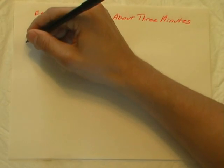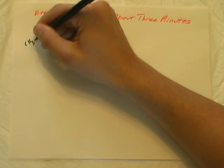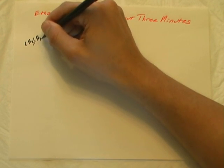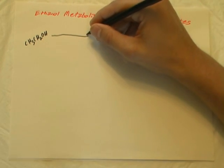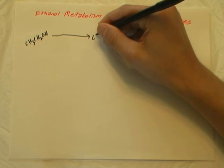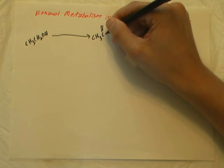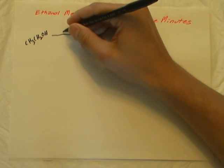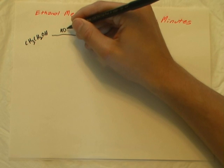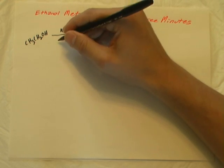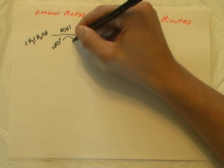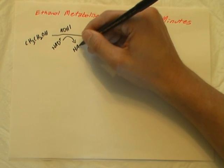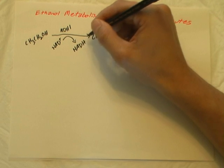Ethanol metabolism in about three minutes. Ethanol is a two-carbon alcohol, and when it's consumed, it's metabolized primarily in the liver to acetaldehyde by the cytosolic enzyme ADH1. This reaction results in the conversion of one NAD+ to one NADH.